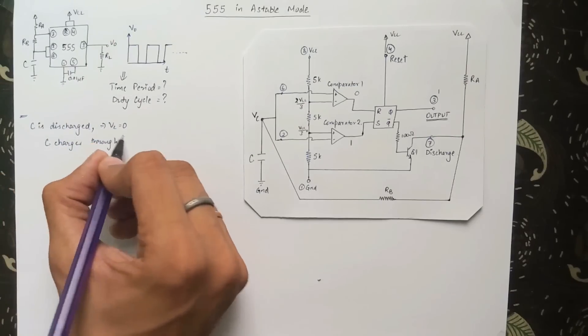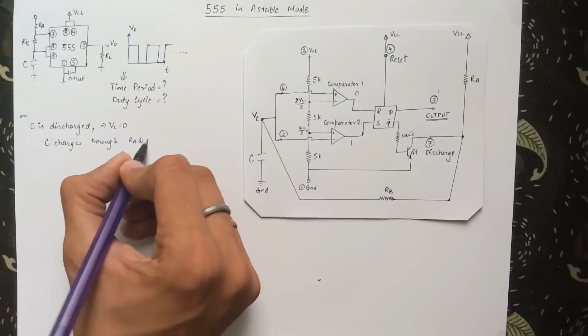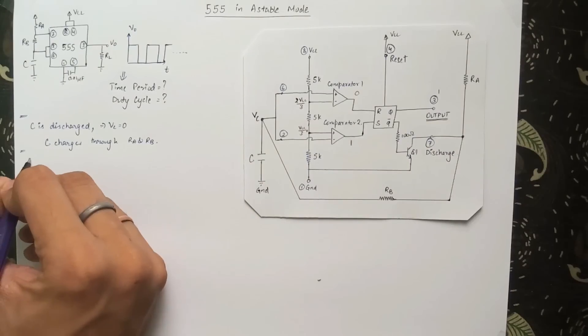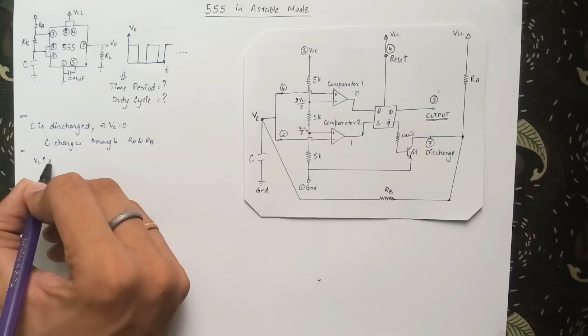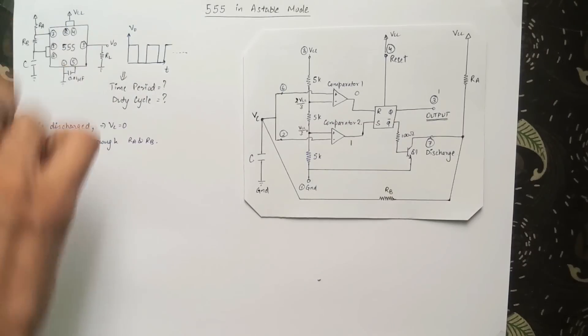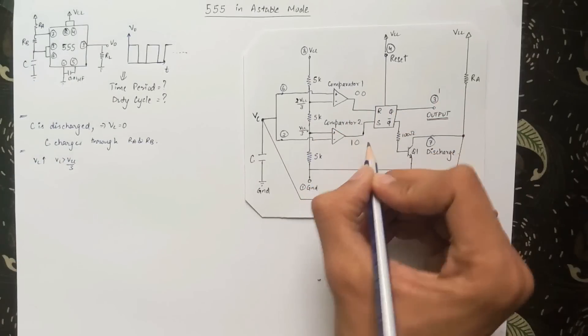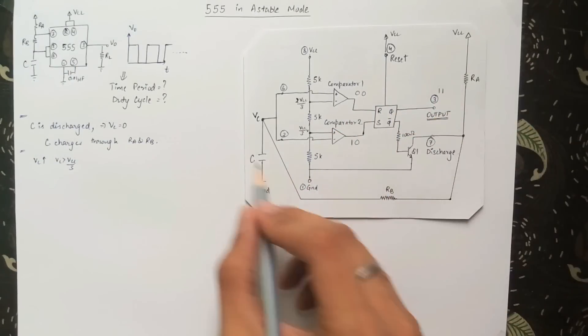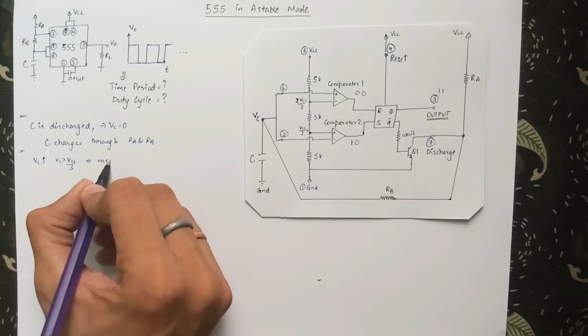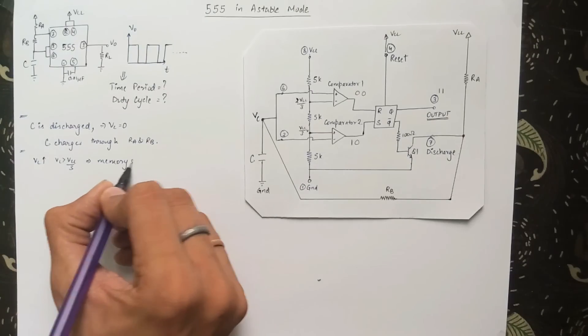In this configuration, the capacitor C charges through RA and RB. As the capacitor charges, the voltage across it increases. And once it reaches beyond Vcc by 3, the output of comparator 2 becomes zero. The output of comparator 1 is still zero. For zero and zero input to the flip-flop, the output remains the same as the previous state. Therefore, the capacitor still charges through RA and RB.